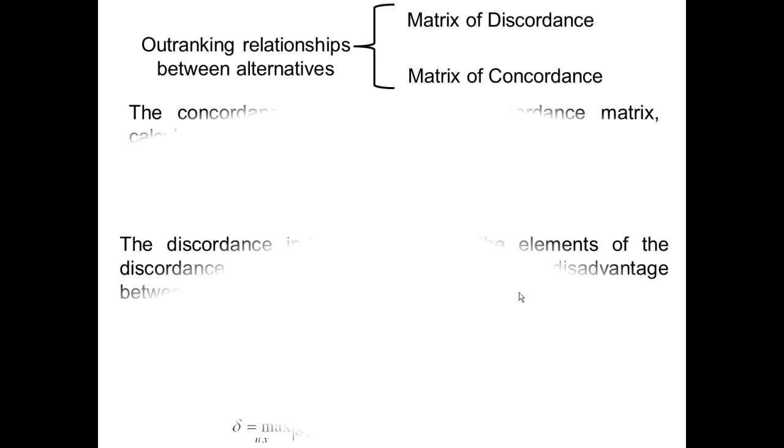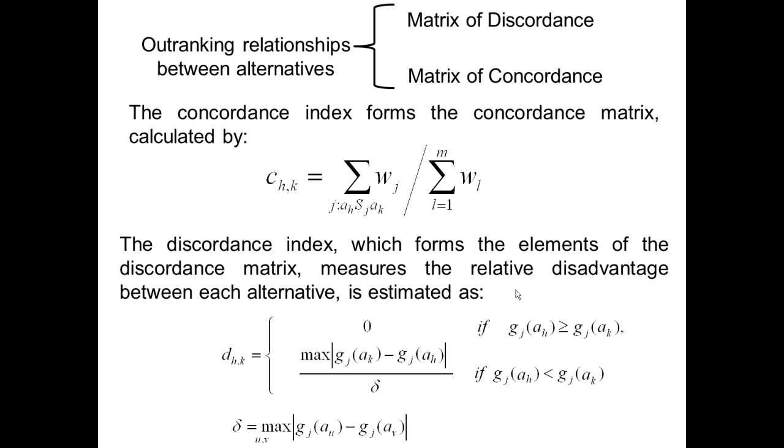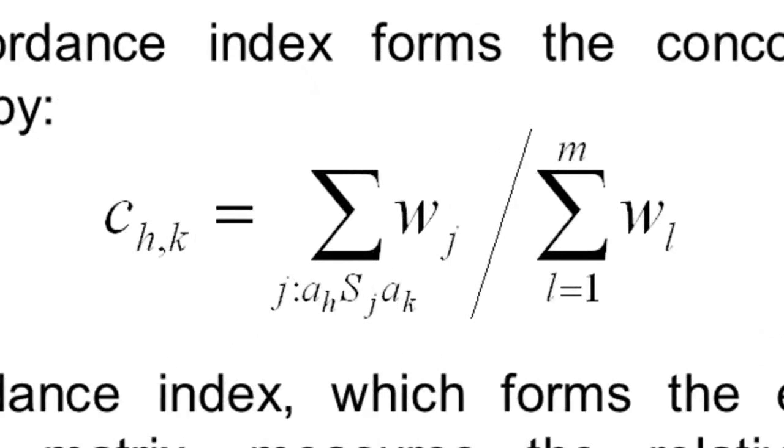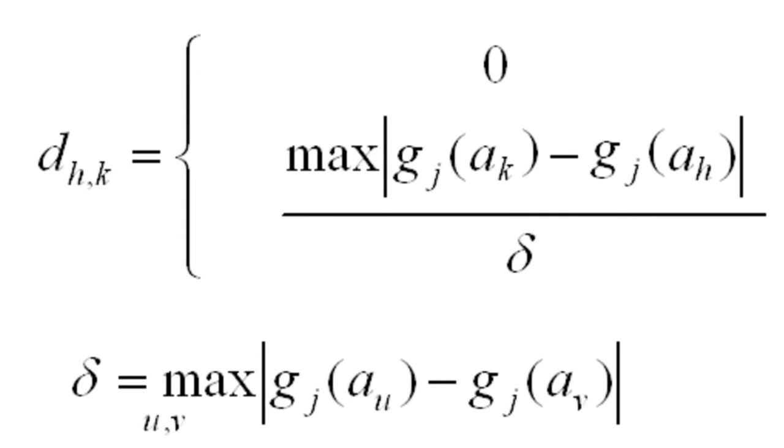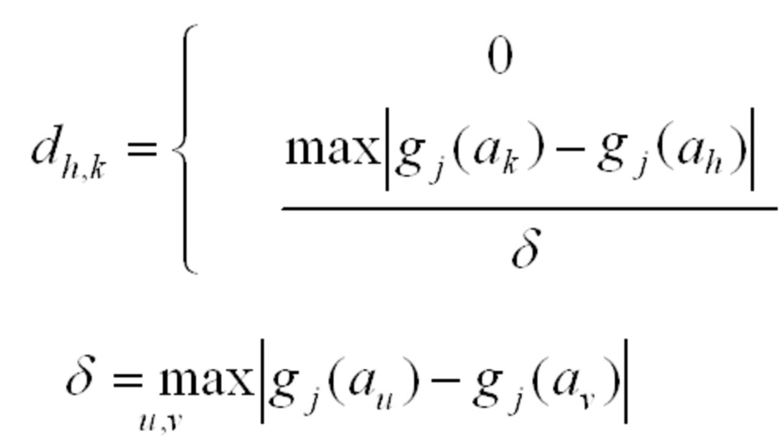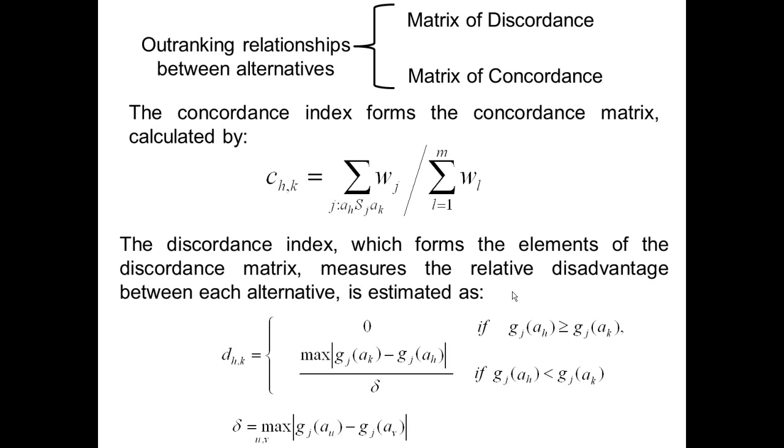The concordance index forms the concordance matrix and is calculated as the sum of weights for those criteria where alternative H outranks alternative K, as given by this expression. The discordance index, which forms the elements of the discordance matrix, measures the relative disadvantage between each alternative. It can have two values, either zero or non-zero, where delta is the range of the scale associated with criterion J.